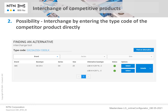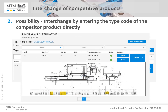Entering the entire type code provides much more information about the product and, as a result, trims down the number of available selections. Once again, all parameters can now be compared by clicking the Details button on the very right side, which will generate a table. After reviewing the table, the part number shown at the bottom was the closest match and was therefore chosen by clicking on the corresponding Select button.